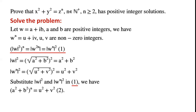From identity 1 we have (a² + b²)ⁿ = u² + v².